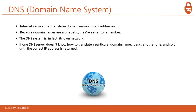Next is DNS — Domain Name System. It is an internet service that translates domain names into IP addresses. We use IP addresses whenever we are connected with the internet, and DNS converts domain names to IP addresses and vice versa. Because domain names are alphabetic, they are easy to remember. The DNS system is its own network — if one DNS server does not know how to translate a particular domain name, it asks another, until the correct IP address is returned.